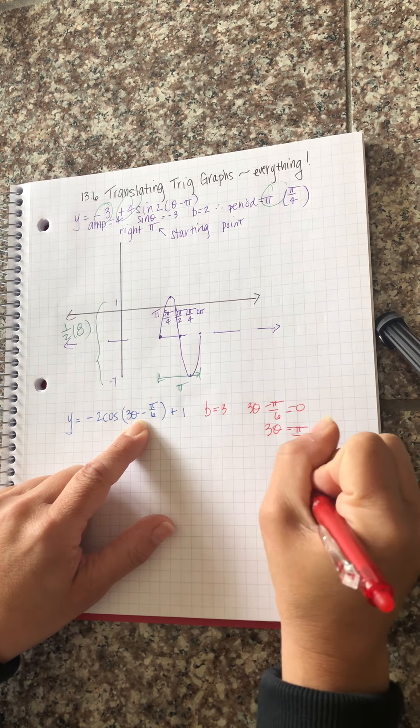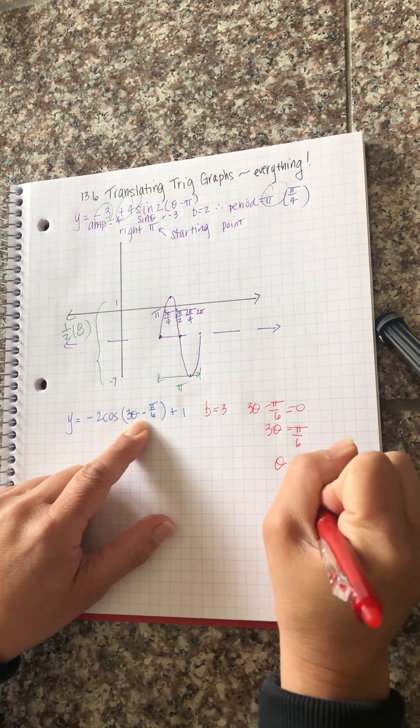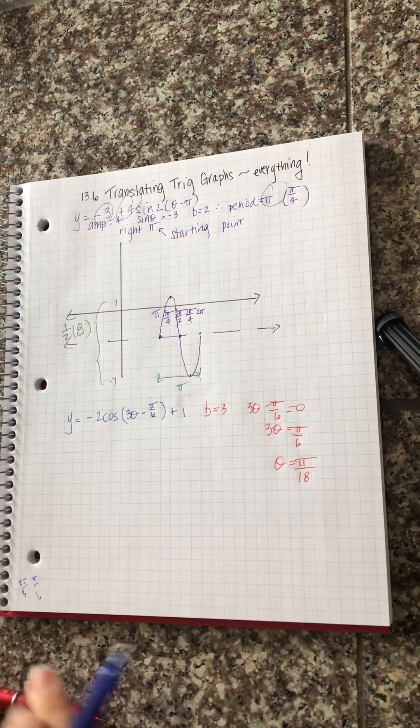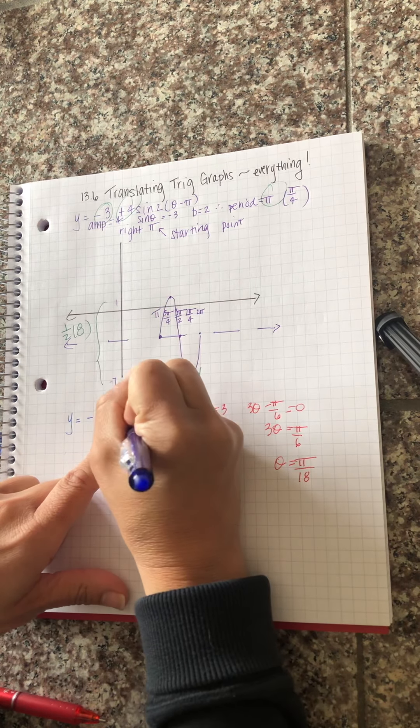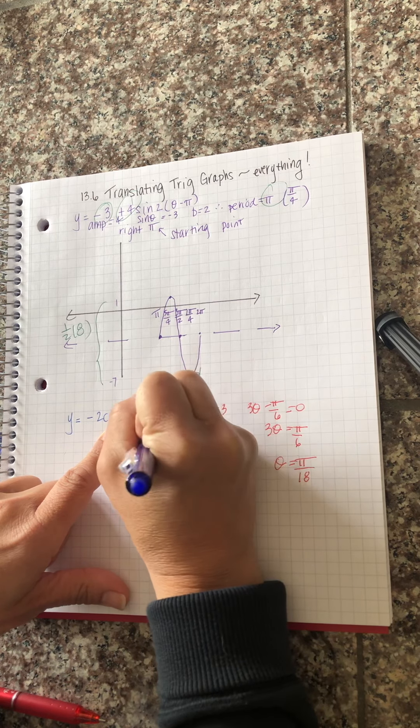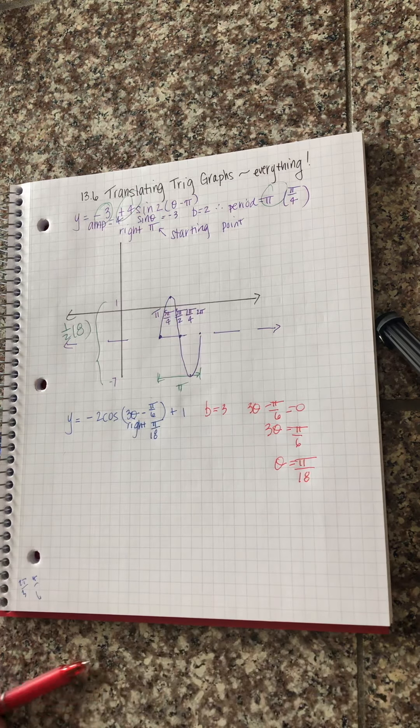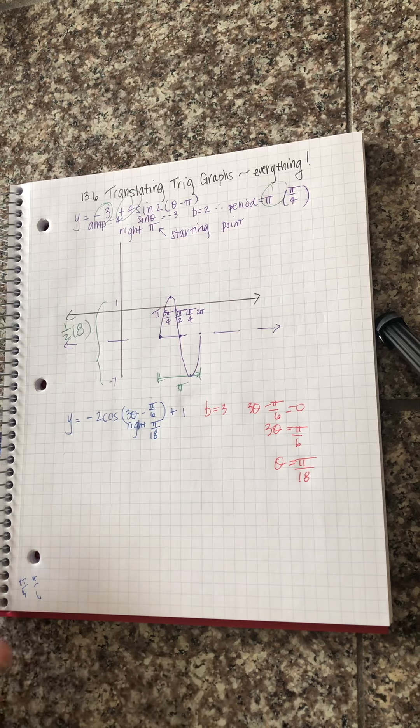So theta is pi over 18. That means that this is a shift right pi over 18. Hopefully that matches up nicely with our period but we shall see.